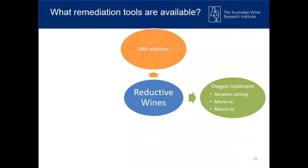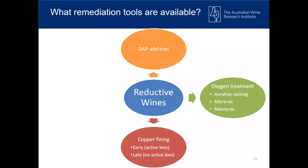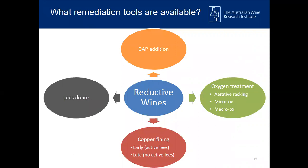You can also use macro-oxygenation where quite a lot of oxygen is introduced in the wine. Usually the safest time for macro-ox is during active ferment where the yeast can utilize the oxygen, aiming to reach saturation. You can also use copper fining — the best time is early when you have some active lees available that can bind the residual copper. The copper strips the sulfides, then binds to the lees, and then you can remove the lees. Some winemakers also make use of a lees donor — taking lees produced from a clean wine and adding it to your stinky ferments, which also binds some of the reductive characters.